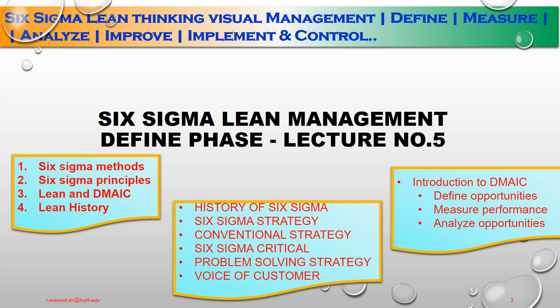Six Sigma Lean Thinking, Visual Management — Define, Measure, Analyze, Improve, Implement and Control Mechanisms.